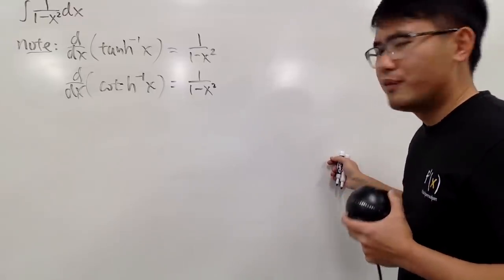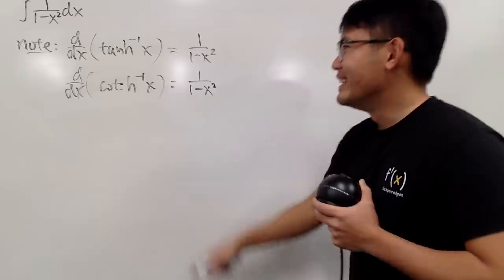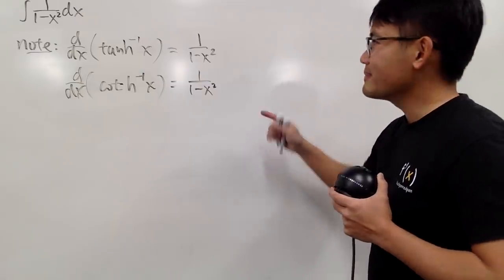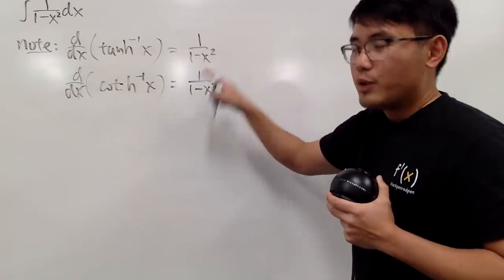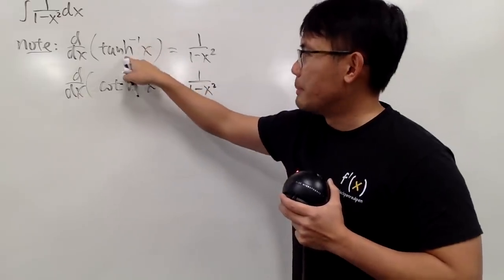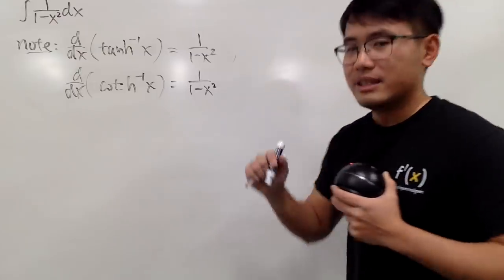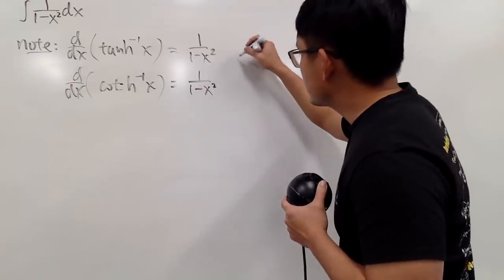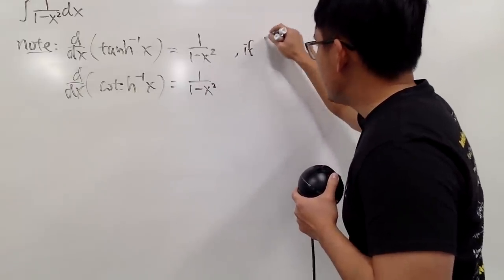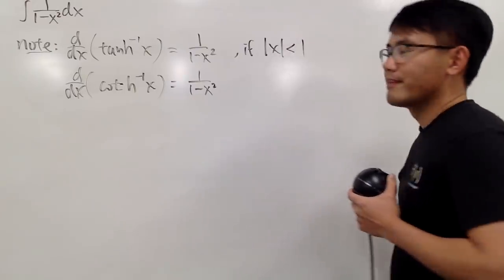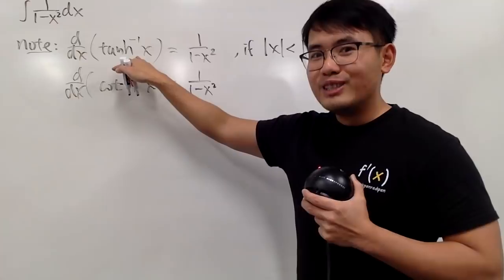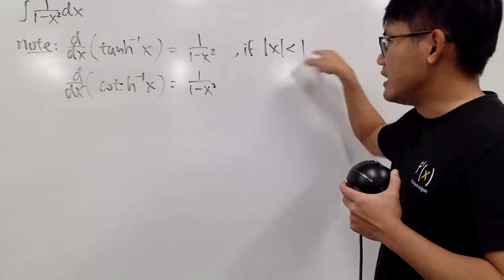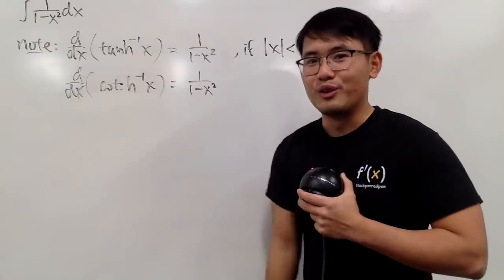So, is there any difference? Yes — they are not exactly the same function. When you use these, you have to be really careful about the domain. For the inverse hyperbolic tangent, the domain is anything between negative 1 and 1, not including the endpoints. So this only works if the absolute value of x is less than 1. In order to make sense of this expression, you have to make sure the absolute value of x is less than 1, because that's the domain for that function.